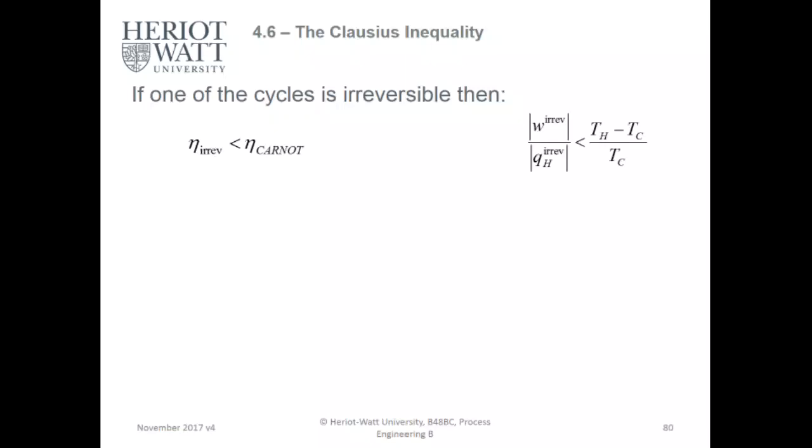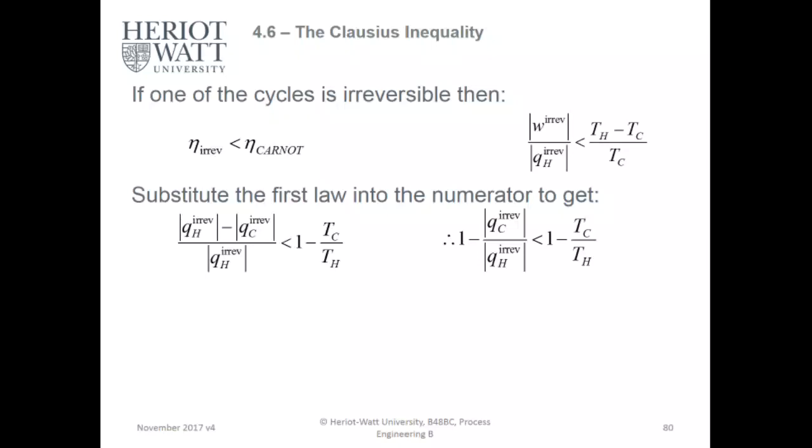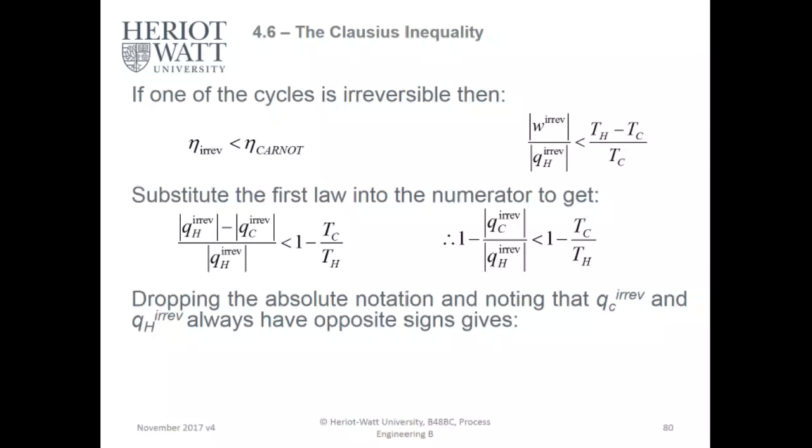If one of the cycles is irreversible, then the efficiency of the irreversible cycle is lower than the Carnot cycle. Hence, work irreversible over QH irreversible is lower than TH minus TC over TC. Substituting the first law into the numerator, we get 1 minus QC irreversible over QH irreversible is lower than 1 minus TC over TH. Noting that QC irreversible and QH irreversible always have opposite signs gives QC irreversible over QH irreversible minus TC over TH.